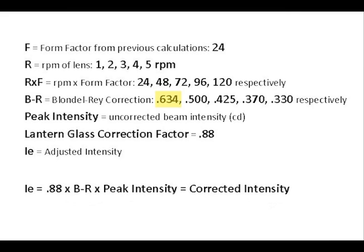Peak intensity of 15,224 candela and the lantern room glass correction factor of 0.88. Working through the formula, the adjusted intensity is 0.88 times 0.634 Blondel Ray factor times the peak intensity would be equal to 8,494 candela for the corrected intensity.